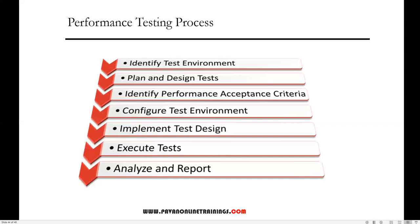The fifth step is to implement the test design — create the performance test according to your test design, which is based upon the performance requirements. The sixth step is to execute the performance test cases and monitor the test. Finally, the seventh step is to analyze and share the test results, then fine-tune and retest to see if there are any improvements or decreases in performance. Since improvements generally grow smaller with each retest, stop when bottlenecking is caused by the CPU — at that point you may need to consider increasing CPU power.